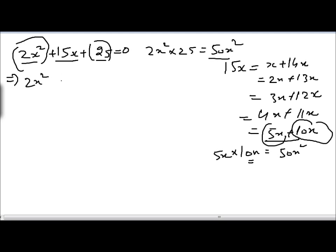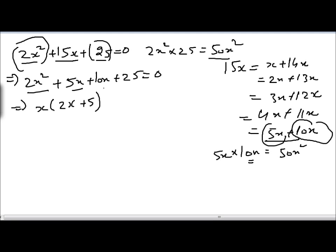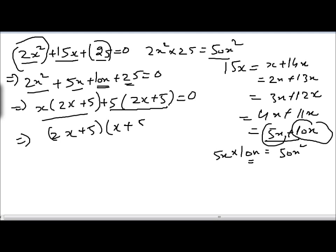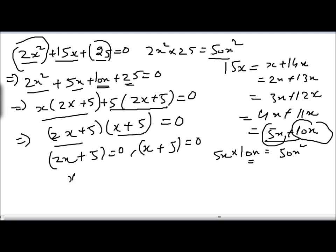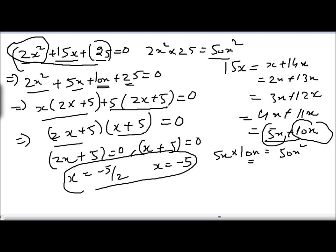So we split 15x into 5x and 10x, writing: 2x squared plus 5x plus 10x plus 25 equals 0. We take x common from the first two terms, giving 2x plus 5 in brackets. Then we take 5 common from the last two terms, also giving 2x plus 5 in brackets. Taking 2x plus 5 common from both groups gives x plus 5 in brackets, equal to 0. Setting each factor to zero gives x equals minus 5 over 2 and x equals minus 5, so x equals minus 5/2, minus 5.